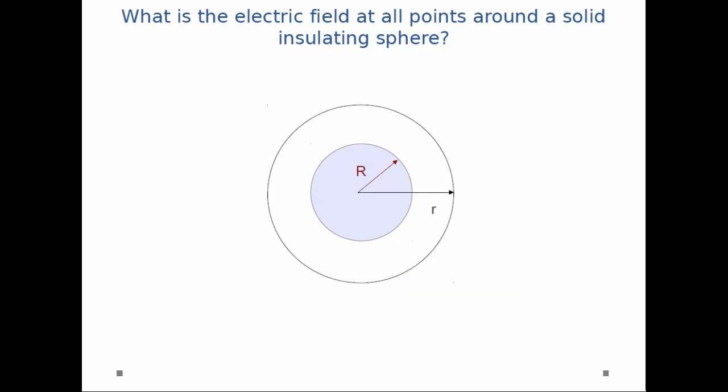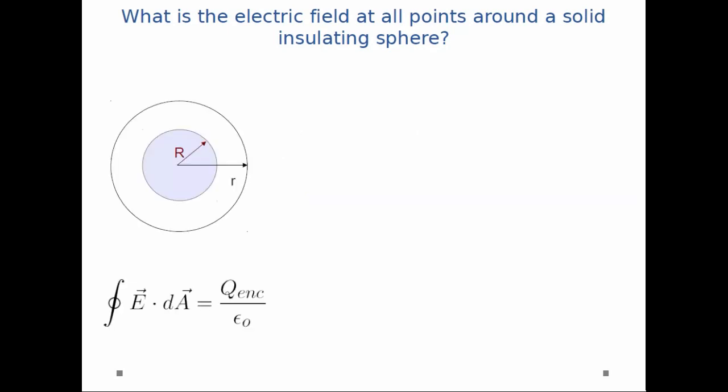So first off, we will draw our Gaussian surface around the outside. We will set up E dot dA is equal to q enclosed over epsilon naught. That is Gauss's law. And we'll go through the math.